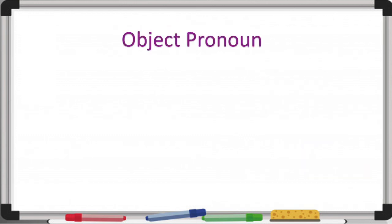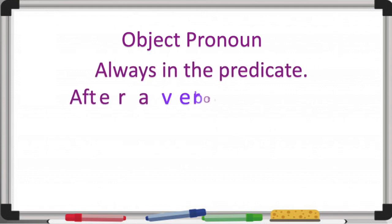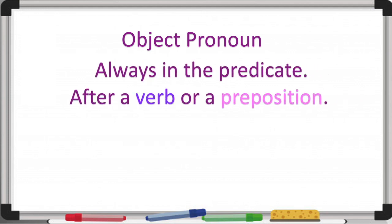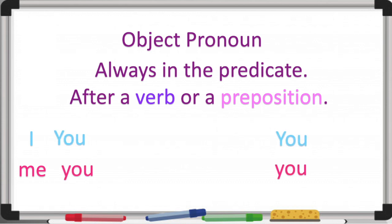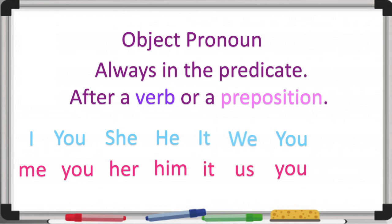Let's see the object pronoun. Remember, it's always in the predicate and it always goes after a verb or a preposition. For 'I' we're going to use 'me.' For 'you' we're going to use 'you,' in singular and in plural. For 'she' we're going to use 'her.' For 'he' we're going to use 'him.' For 'it' we're going to use 'it.' For 'we' we're going to use 'us.' And for 'they' we're going to use 'them.'